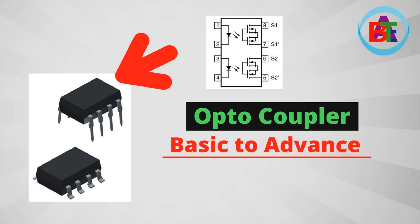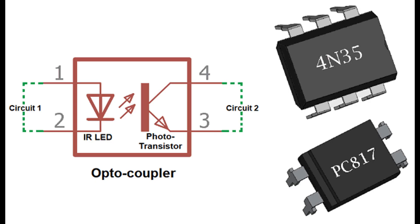The output section of an optocoupler is responsible for detecting the light emitted by the input section's LED and converting it back into an electrical signal. The output section typically consists of a photosensitive component, such as a phototransistor or a photodetector.